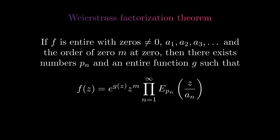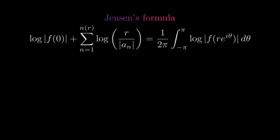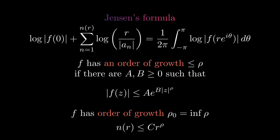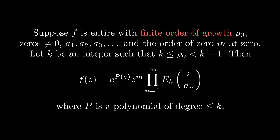When we can restrict how fast the number of zeros with a given magnitude is growing, we can say even more. Jensen's formula links the average behavior of an entire function on a circle around the origin with the distribution of the zeros inside that circle. More formally, if f has no zero at zero, then this equation links the zeros in the disk of some radius with the average growth of f on the boundary of the disk. In order to understand the right-hand side, we introduce the order of growth of a function. Notice that when we have a function with finite order of growth, we can essentially bound the right-hand side with a power of r. This is expressed in the fact that the number of zeros with magnitude lower than r is bounded above by a power of the radius. For entire functions with finite order of growth, we can refine the Weierstrass factorization theorem: instead of having to choose orders for the elementary factors, these are provided by the order of growth, and the entire function in the exponent must be a polynomial. This is the Hadamard factorization theorem.